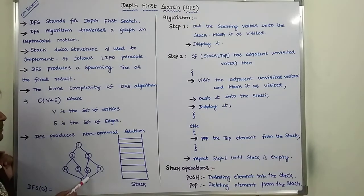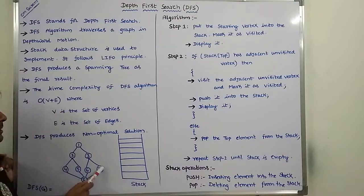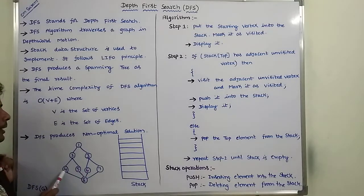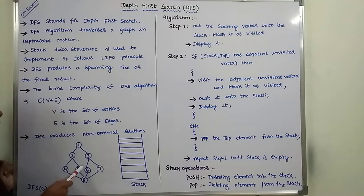Now I am selecting vertex 8. What are the adjacent vertices for vertex 8? 4, 5, 6, 7. Among 4, 5, 6, 7 — 4 is already visited. So we have to select either vertex 5, 6, or 7. I am selecting vertex 5.